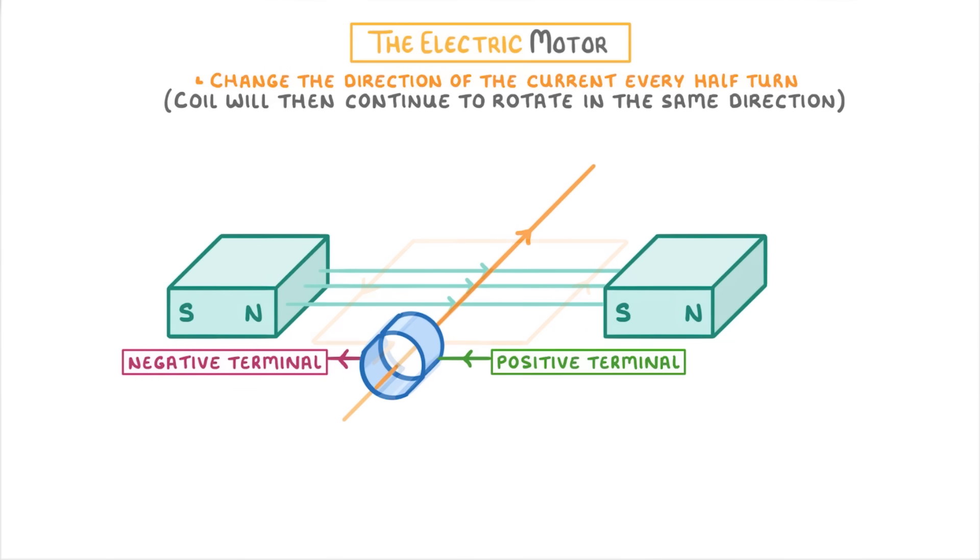The positive and negative terminals stay where they are, which ensures that the current always flows round in the same direction.